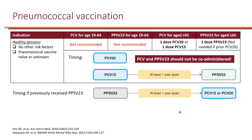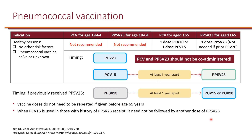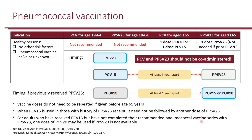Vaccine doses do not need to be repeated if given prior to age 65. When PCV15 is used in those with a history of PPSV23, it does not need to be followed by another PPSV23. For adults who received PCV13 but have not completed their recommended series with PPSV23, they have the option to get PCV20 if PPSV23 is not available.